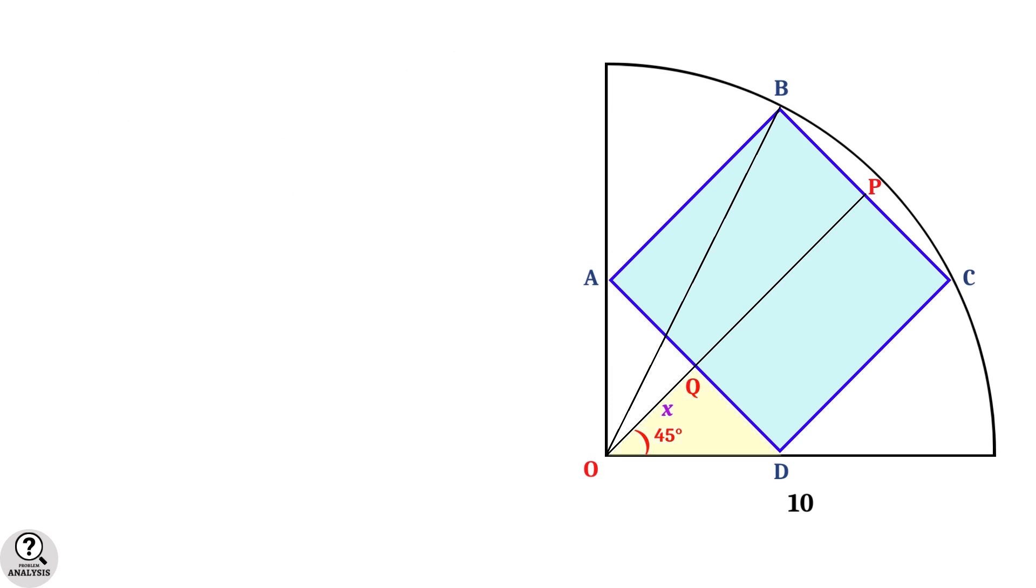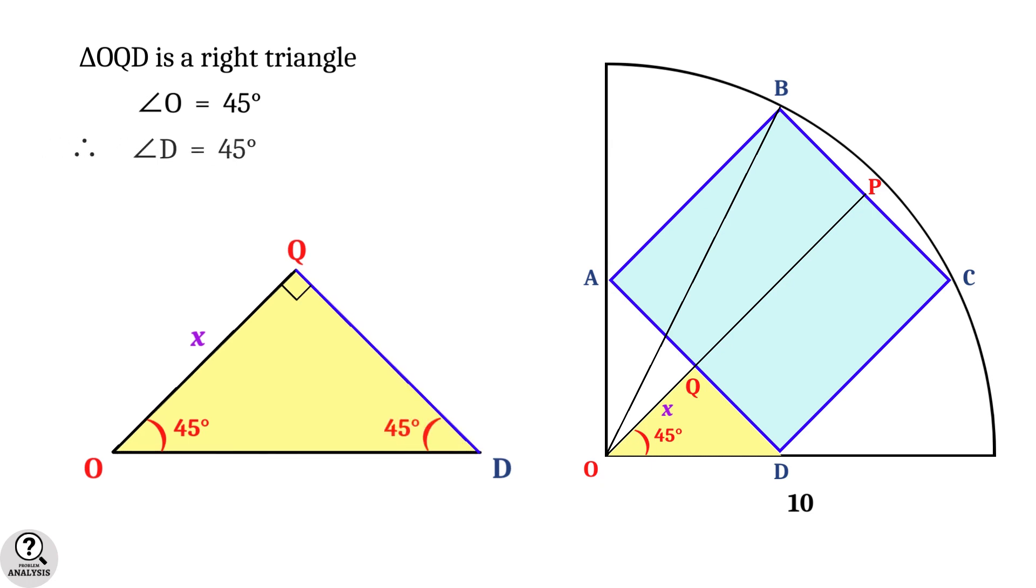To understand this, consider the triangle OQD. It's clear from the figure that this is a right triangle, and angle O is 45 degrees. Hence angle D is also 45 degrees. Then triangle OQD is an isosceles triangle. This implies the sides QO and QD are equal, that is, equal to x units.